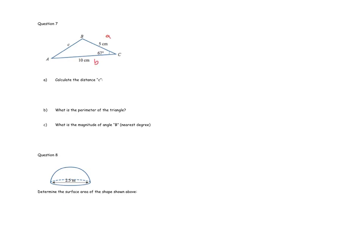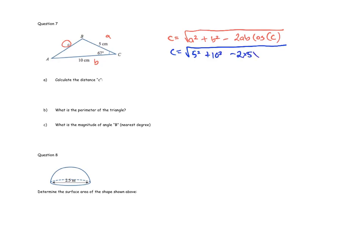Question 7: calculate the distance c. Labelling the triangle with little a, b, and c, I've worked out from the flow chart that c is found using the cosine rule: c squared equals a squared plus b squared minus 2ab cos C. Plugging in the values: 5 squared plus 10 squared minus 2 times 5 times 10 times cos 67. The answer is 9.27 centimeters. Looking at the triangle with sides 10 and 5, that's not unreasonable.